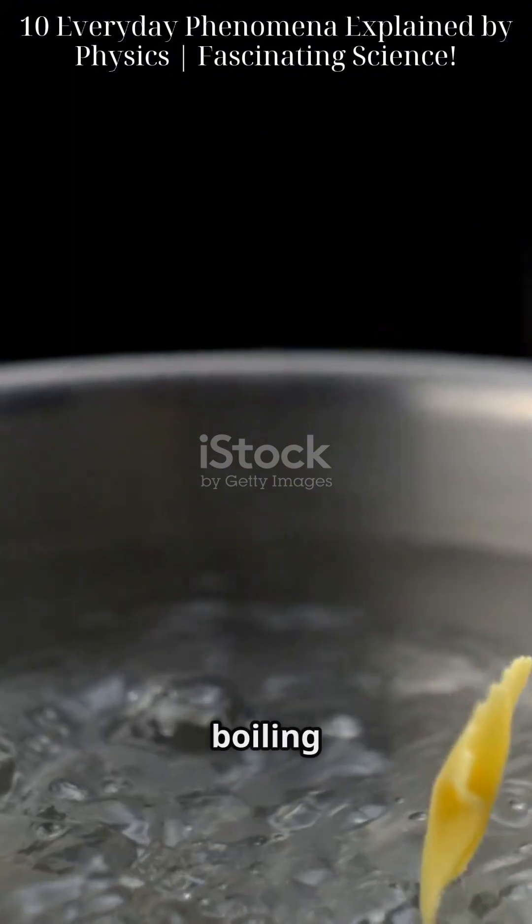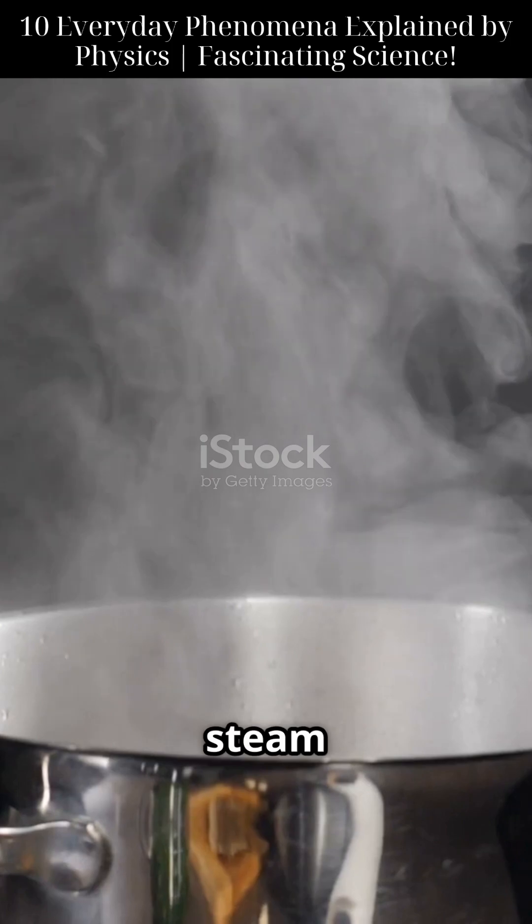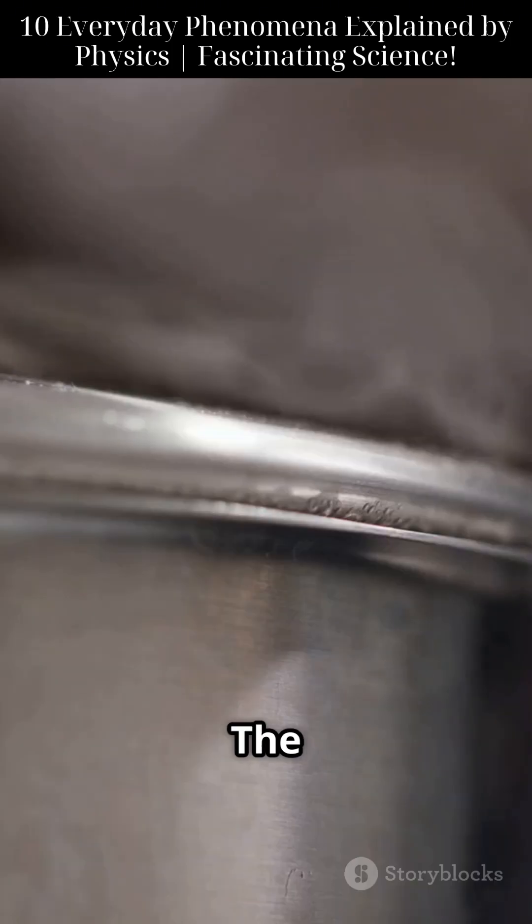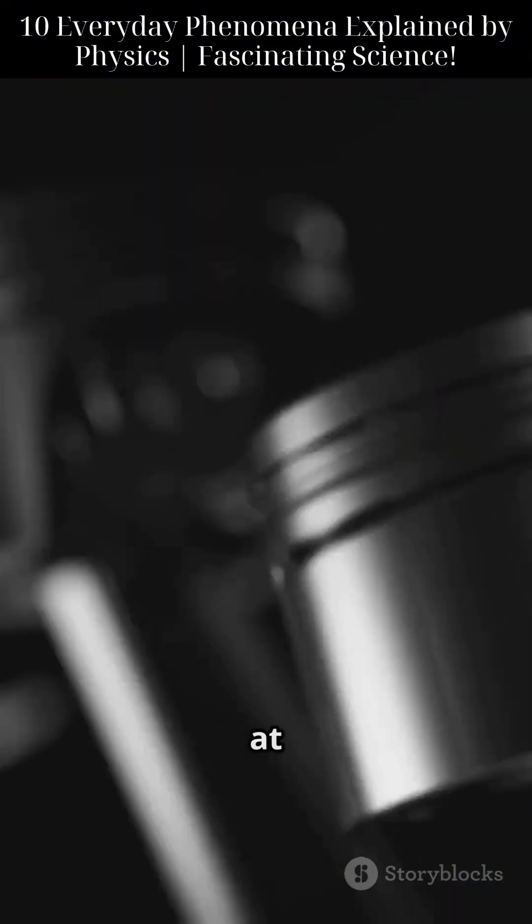First up, let's talk about boiling water. When you see a pot boiling and the lid rattling, that's steam increasing pressure inside. The steam pushes the lid up, then gravity pulls it back down. Essentially, it's a mini piston at work.